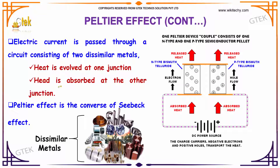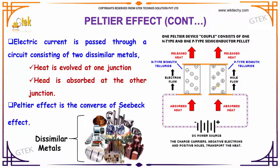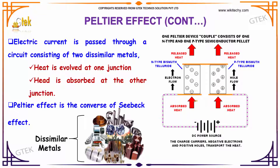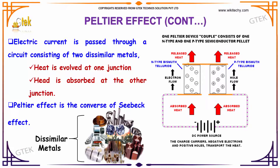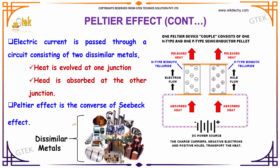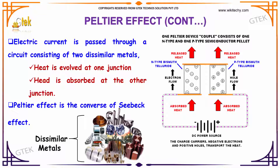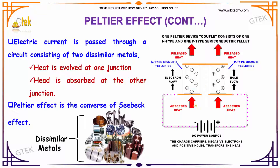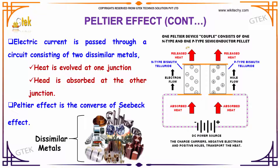The electric current is passed through a circuit consisting of two dissimilar metals. Heat is evolved at one junction and heat is absorbed at another junction. This is referred to as Peltier effect and it is a converse of Seebeck effect. You are able to see the current is passed within the two dissimilar metals — the heat is absorbed and it is evolved.